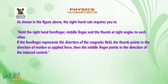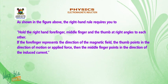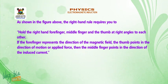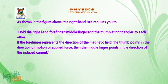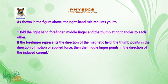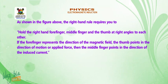As shown in the diagram, the right-hand rule requires you to: 1. Hold the right-hand forefinger, the middle finger, and the thumb at right angles to each other. If the forefinger represents the direction of the magnetic field and the thumb points in the direction of motion or applied force, then the middle finger points in the direction of the induced current.